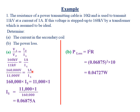The current is 1 ampere divided by the current in the secondary coil. On cross multiplication: 160,000 volts times the current in the secondary coil equals 11,000 volts times 1 ampere. Dividing both sides by 160,000, the current in the secondary coil equals 11,000 times 1 ampere divided by 160,000, which gives 0.06875 amperes.